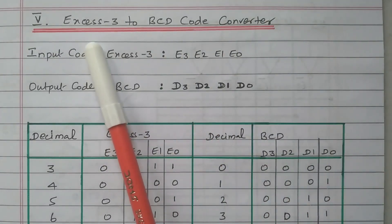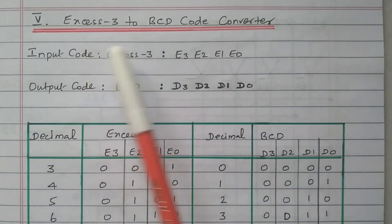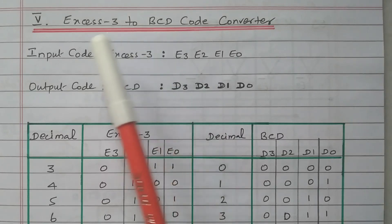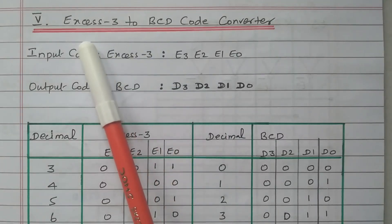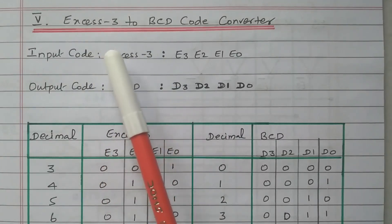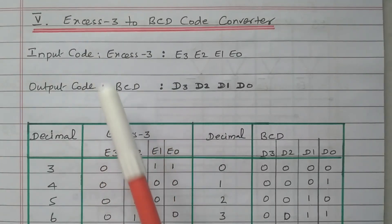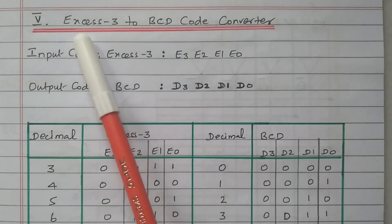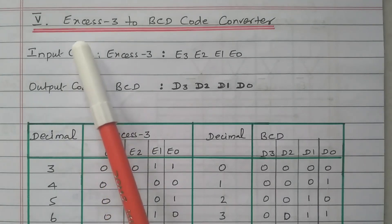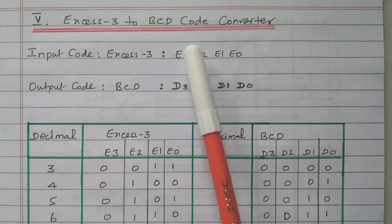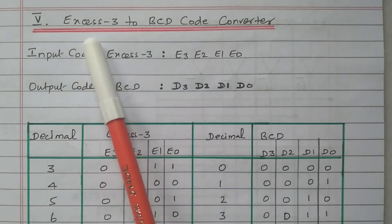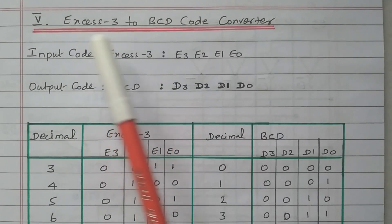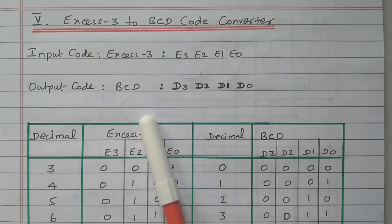What is XS3 code? From the BCD code by adding 3, we will get the XS3. XS3 means adding 3 — for the normal BCD, by adding 3 we will get the XS3 code. Now we are going from XS3 to BCD, so we need to subtract 3 from the XS3, and that gives us the BCD code.